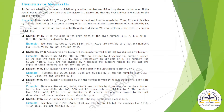Divisibility by 4: a number is divisible by 4 if the number formed by its last two digits is divisible by 4 — meaning if the digits at the 1's and 10's place are divisible by 4, divisibility by 4 is confirmed. Divisibility by 5: if at the last position there is 0 or 5, the number is divisible by 5. Divisibility by 8: check the last 3 digits — if they are divisible by 8, then only the number is divisible. Divisibility by 10: if at the 1's position there is 0, then it is divisible by 10.